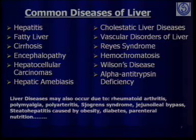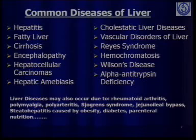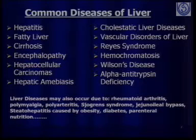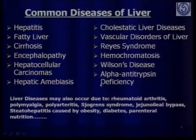The most common liver disorders include hepatitis, fatty liver, liver cirrhosis, encephalopathy, hepatocellular carcinoma, hepatic amoebiasis, cholestatic liver diseases, vascular disorders of liver, Reye's syndrome, hemochromatosis, Wilson's disease, and alpha antitrypsin deficiency. The last three — hemochromatosis, Wilson's disease, and alpha antitrypsin deficiency — are inherited autoimmune disorders.